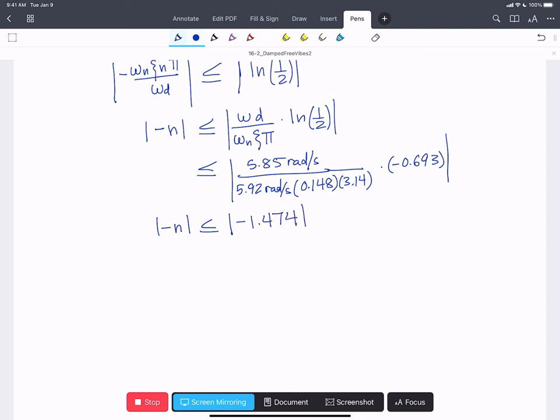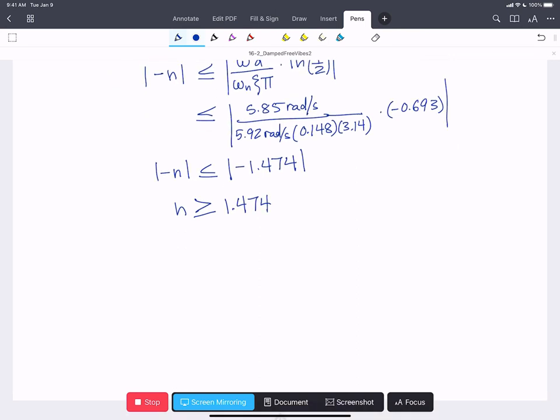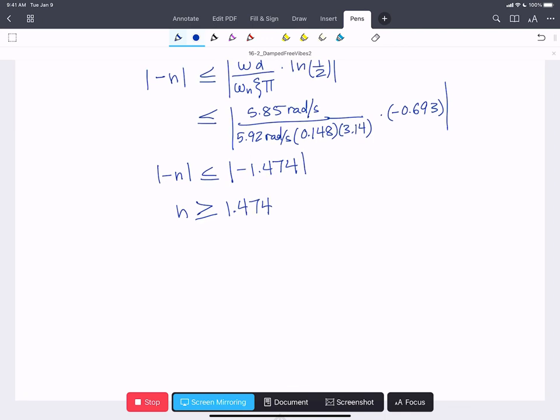We take the minus side from both sides and we get that n has to be greater than or equal to 1.474. Because our n's have to be integers, then the first n that is below the magnitude of x naught over 2 is going to be n of 2. So the first n where the peak has a magnitude that is less than x naught over 2 is the second half cycle.